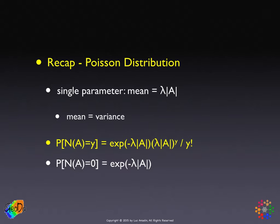Formally, the probability of getting n points — n events — in an area A, being equal to a given value Y, say 5, 10, or 20, is the negative exponential of the mean: e to the power of minus lambda A, times the mean to the power Y, where Y is the number of points. So that is lambda times A to the power Y, divided by Y factorial. A very interesting case is the probability of not having any points in a given area A, which simplifies by setting Y to 0, leaving just the negative exponential of the mean: e to the minus lambda times A.